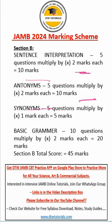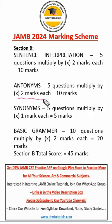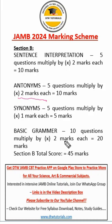For Section B, look at what we have: sentence interpretation carries two marks. Antonyms — please note this — antonyms carry two marks. I've done a lot of videos on antonyms in the one-minute videos. Antonyms can confuse you, so please go through those videos. Synonyms carry one mark. Basic grammar questions — you have 10 questions and each carries two marks. That's for Section B.